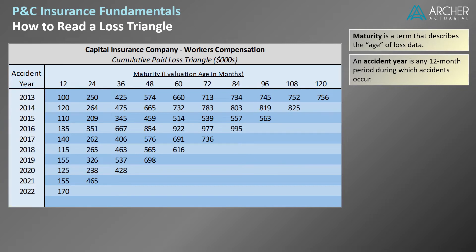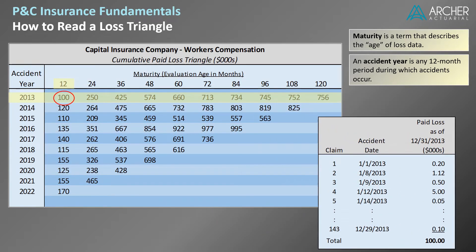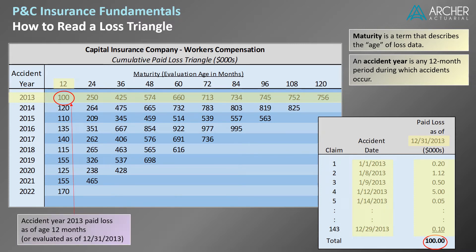But accident year is one of the most common ways to organize loss triangles. Let's take a closer look at the example triangle. Beginning with the loss data for accident year 2013, we can see that paid losses for accident year 2013 equaled $100,000 at age 12 months. In order to calculate this amount we first had to identify all of the insurer's workers' compensation claims with accident dates in 2013. Next we took a snapshot of their cumulative paid loss values through 12-31-2013, which is 12 months after the beginning of accident year 2013.